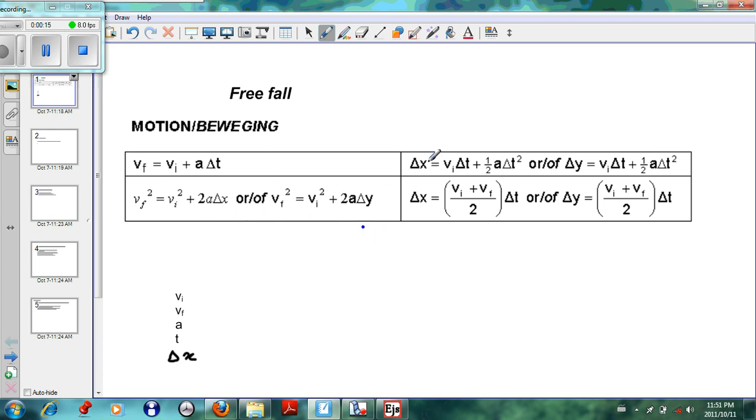These are the equations given in the data sheet. To recap quickly: vi refers to initial velocity, vf refers to final velocity, a refers to acceleration, t refers to time, and delta x refers to displacement.